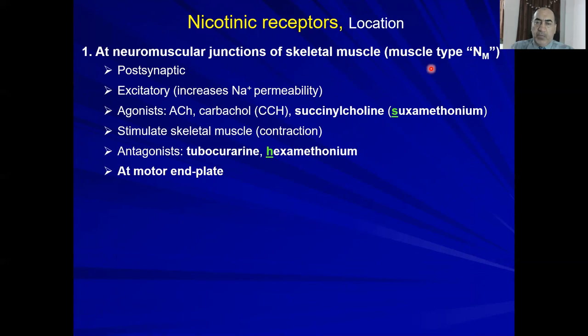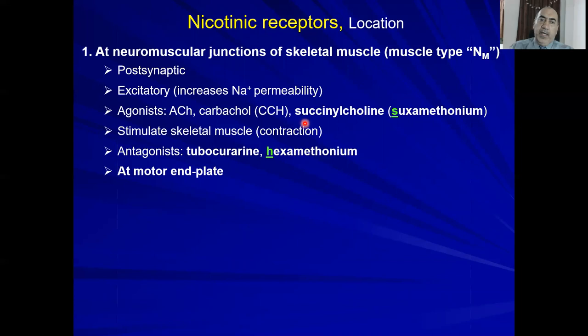Further details of the NM receptor — the somatic one on skeletal muscle: the receptor is at the motor end plate, it is post-synaptic, and it increases sodium permeability, so it is excitatory. Agonists include acetylcholine, carbachol, and succinylcholine — also called suxamethonium. Please remember the 'S'. Suxamethonium stimulates skeletal muscle causing contraction.